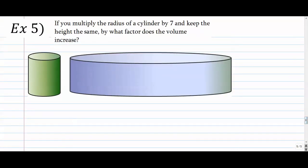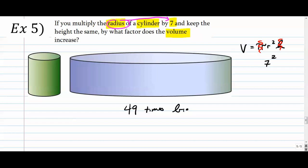Number 5. Two cylinders: if you multiply the radius of a cylinder by 7 and keep the height the same, by what factor does the volume increase? Volume of a cylinder is πr²h. The height stays the same — forget about it. Pi is a constant — forget about it. Take the radius and put a 7 in there. The formula calls for the 7 to be squared, so 7² = 49. The volume increases by a factor of 49.